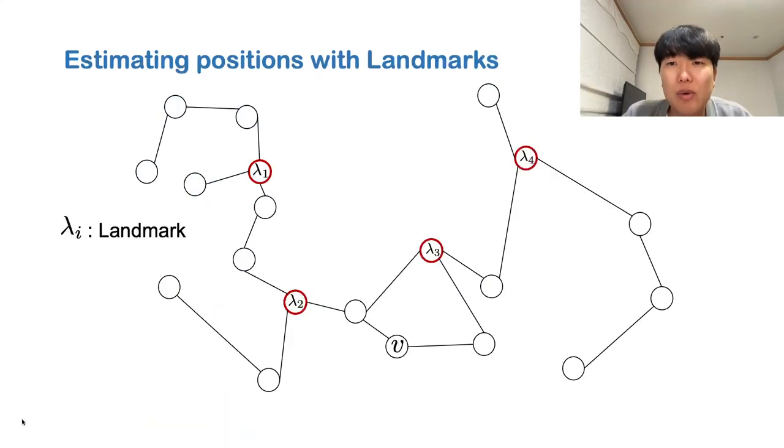We propose an embedding method of positional information using landmarks. Landmarks are representative nodes selected from the graph. The nodes represent their positions using their relative distances to landmarks. For example, five-way distance to landmark 1, two-way distance to landmark 2, and so on.